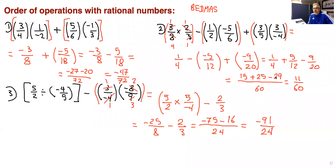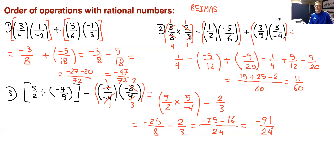I just noticed a mistake I made earlier: 60 divided by 20 is 3, and 3 times 9 is 27, not 29. So fixing that, the answer for that problem is 13 over 60.